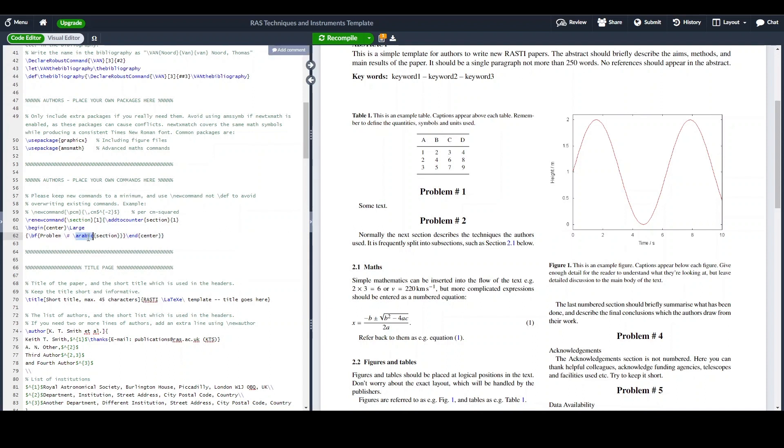I can also change this with Roman numbers as well. So if I compile this again, you can see this is now a Roman numeral or with small numbers as well. So that's one way of doing it.